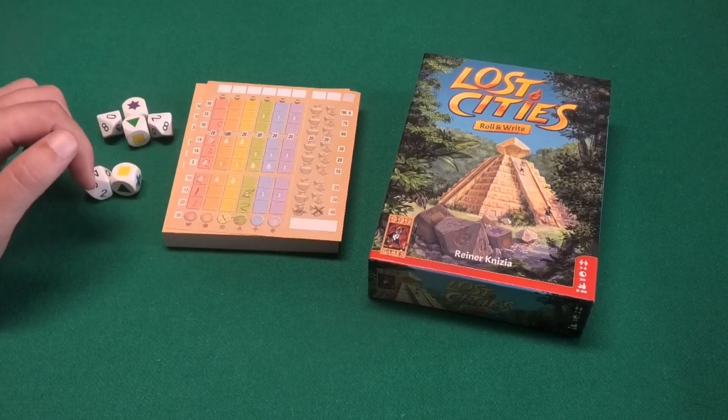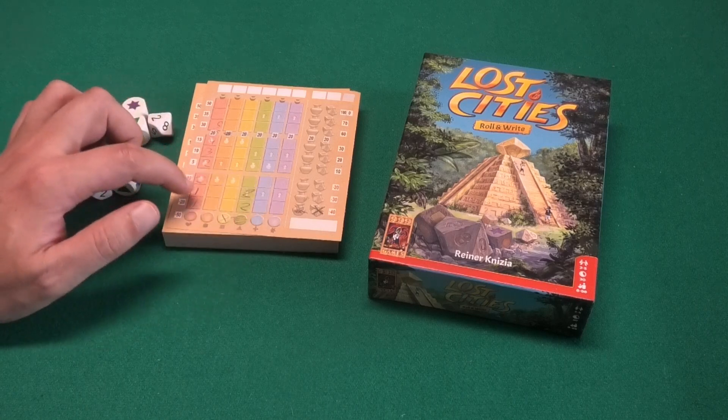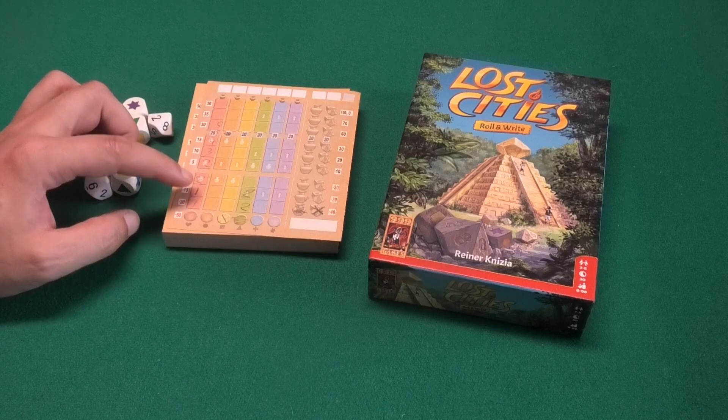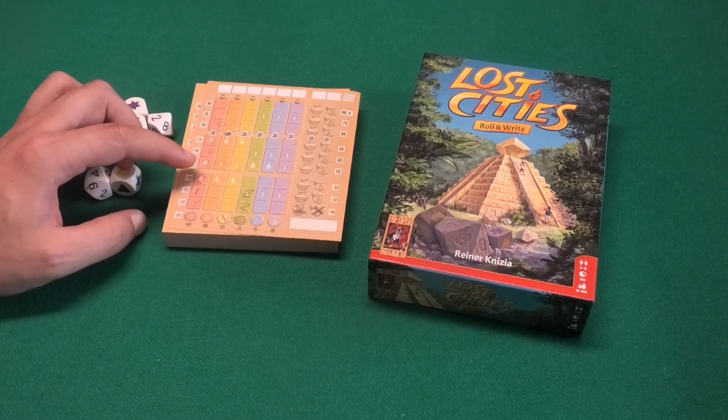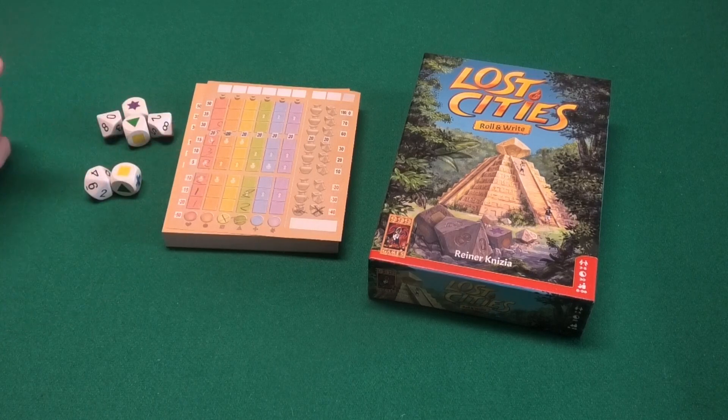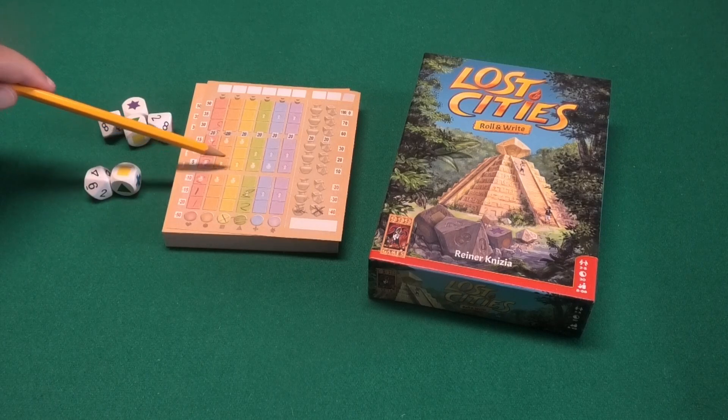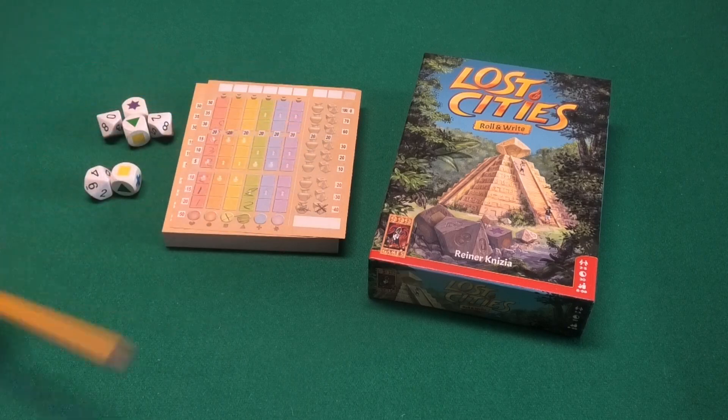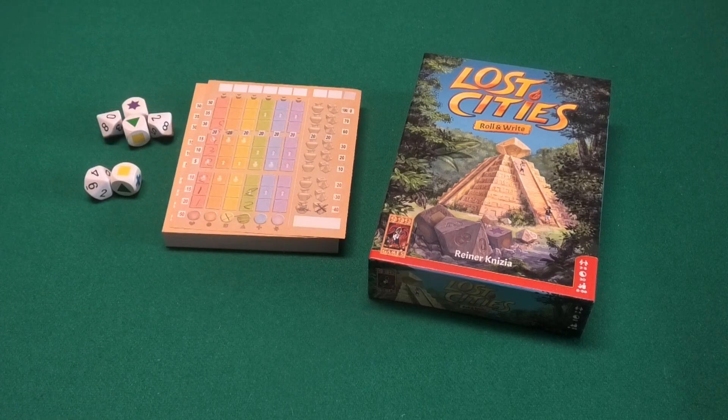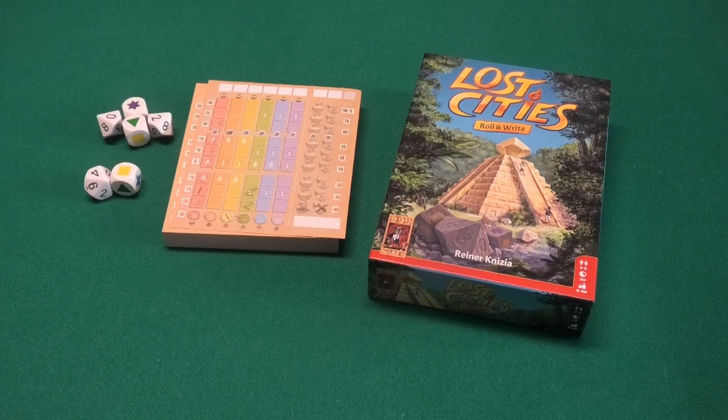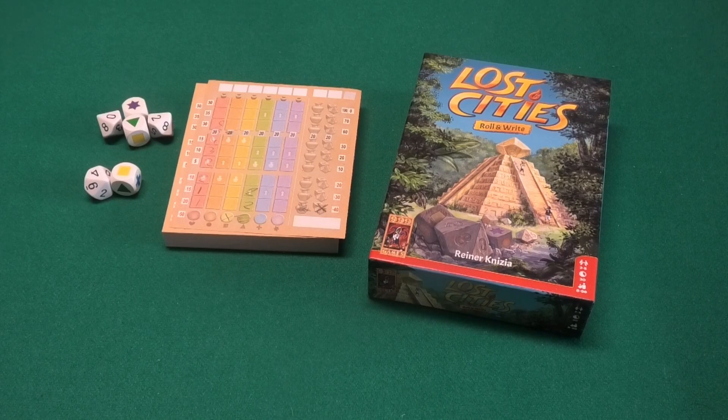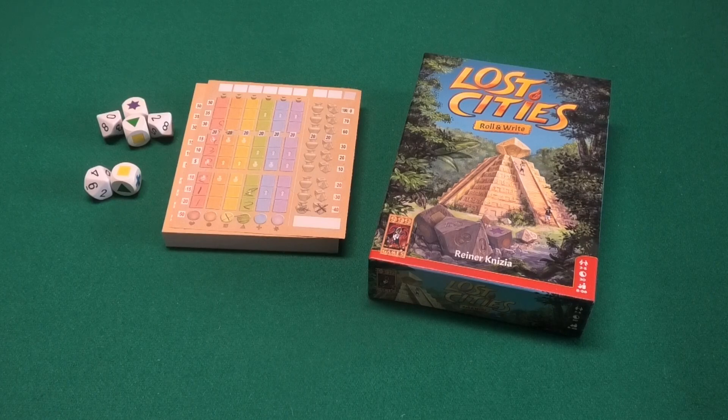And each number you write down has to be equal or higher than the previous number on that track. You can score some extra movements by the arrows and try to score artifacts also to give you extra points at the end of the game. So that's it. And if you have any questions about Lost Cities Roll and Write, please feel free to ask them in the comments below. My name is David. Thank you for watching and hope to see you next time.